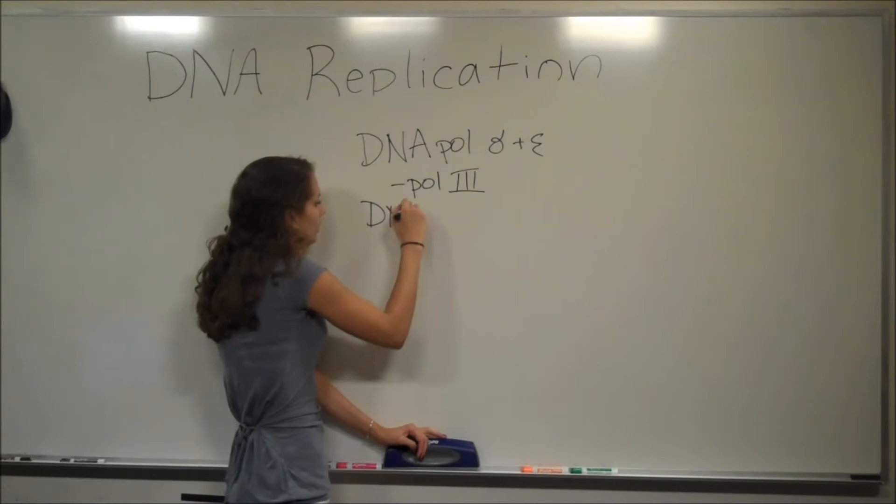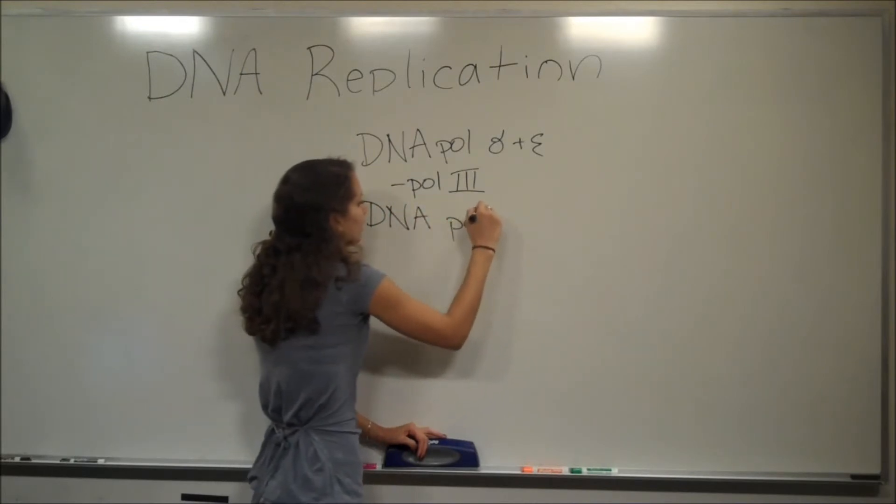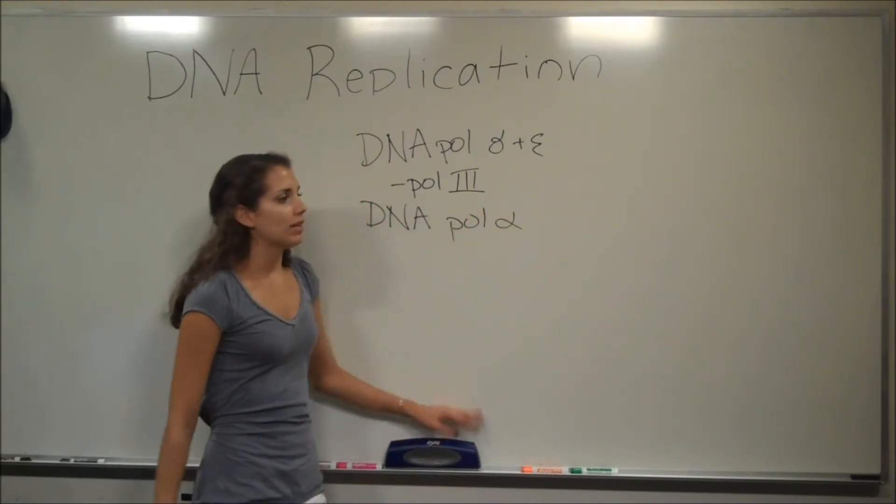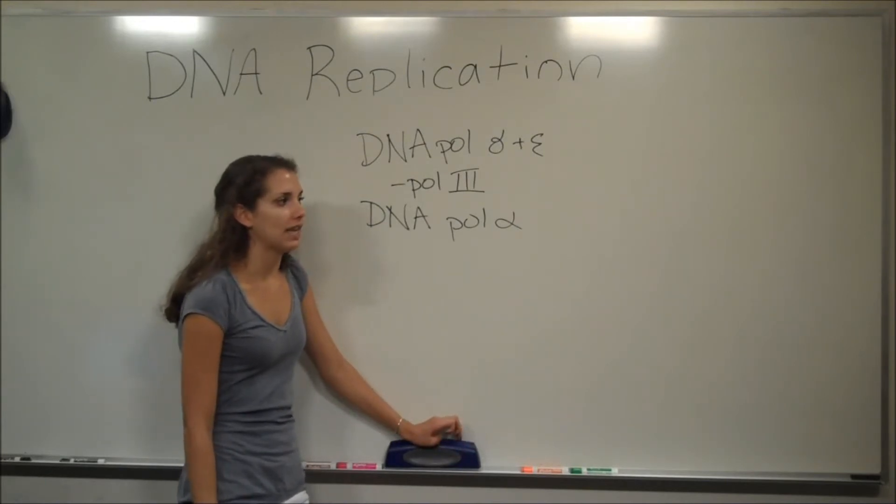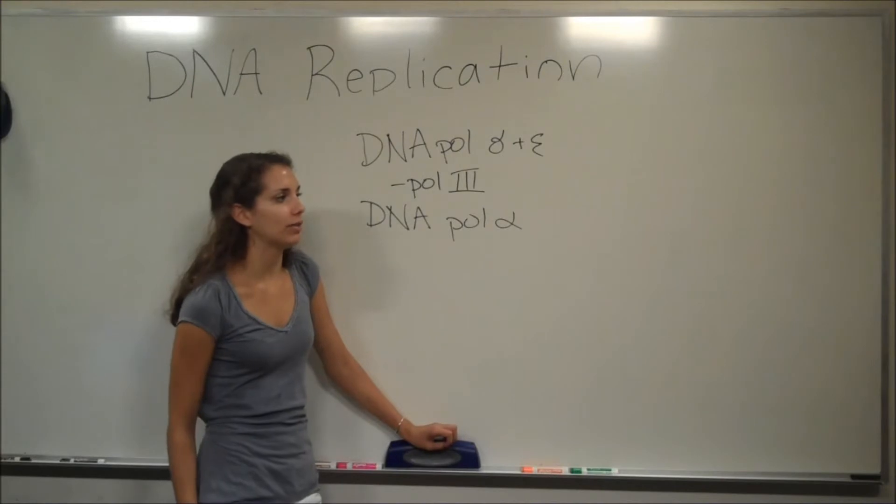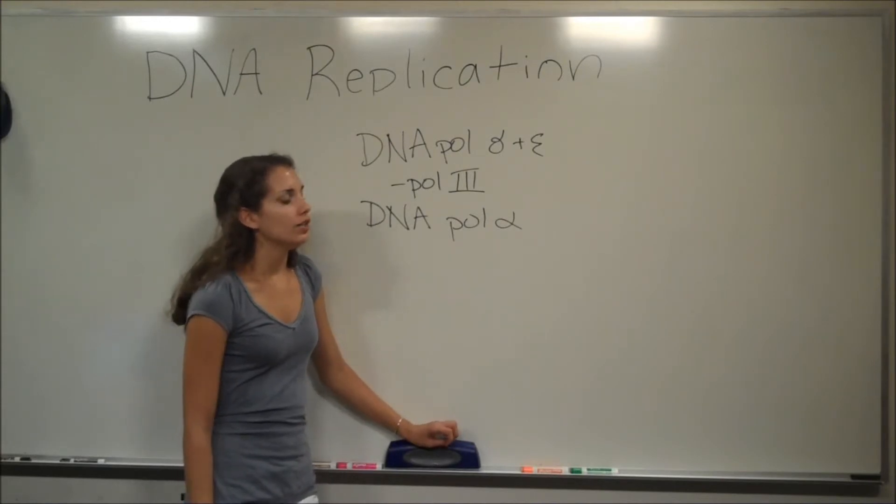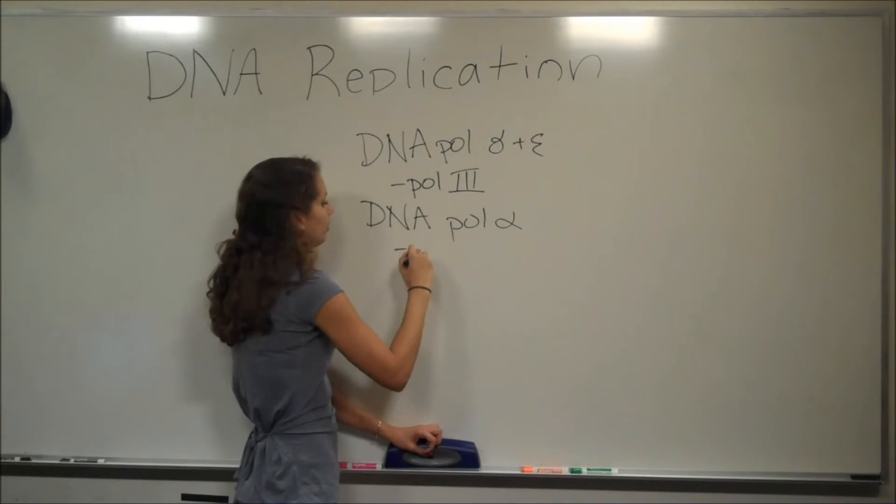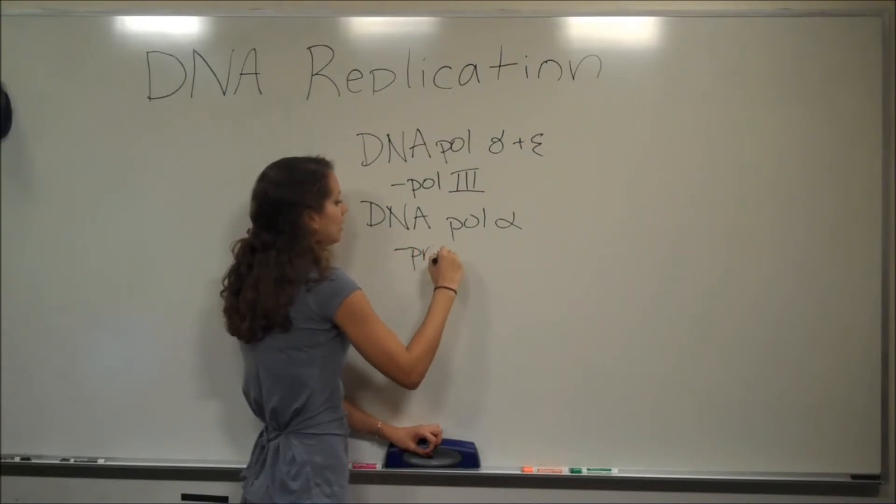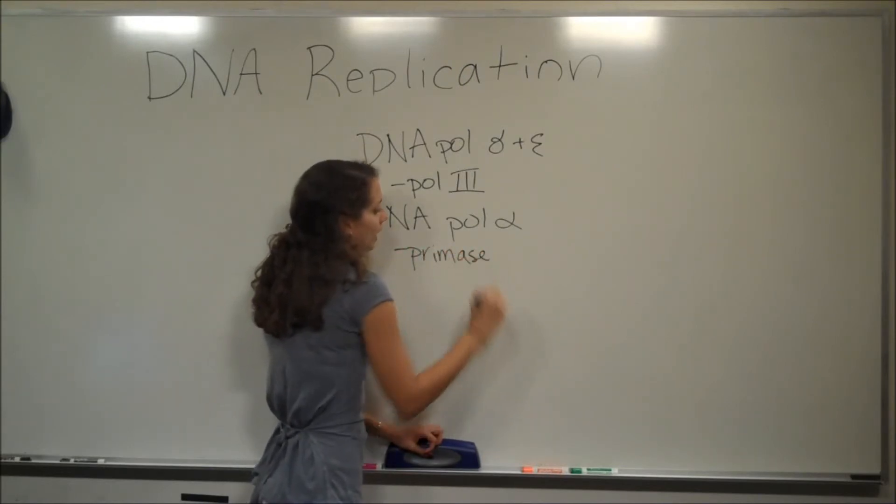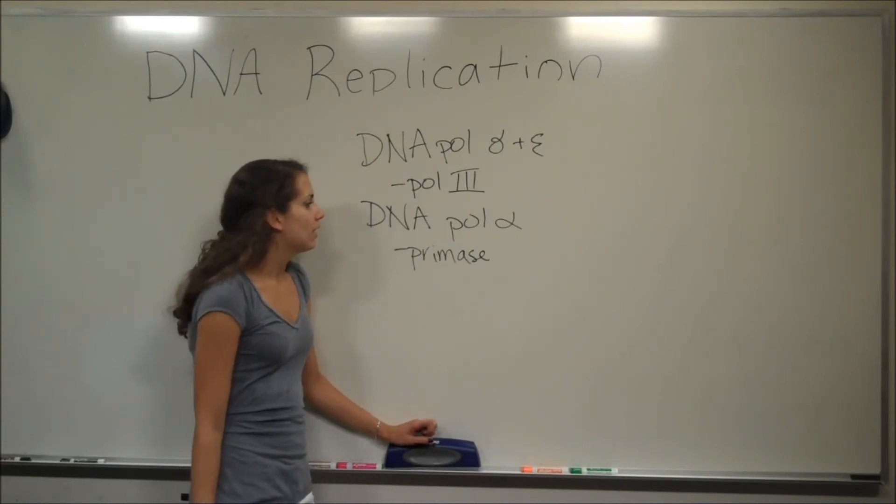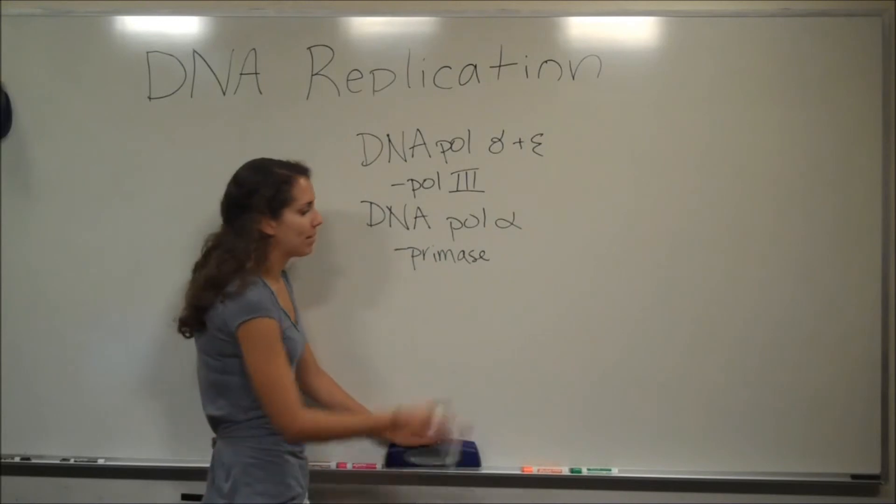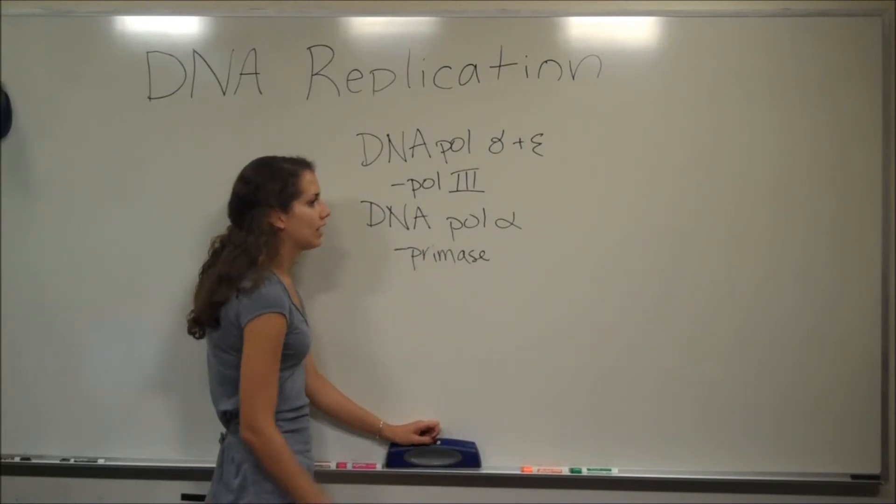Also in eukaryotes is DNA polymerase alpha. And DNA polymerase alpha synthesizes a short RNA primer followed by a longer stretch of DNA before polymerase delta or polymerase epsilon take over. So this has another counterpart in prokaryotes called primase. I didn't really go over it, but I kind of briefly talked about how the polymerase 3 requires an RNA primer. So primase does this for polymerase 3, and DNA polymerase alpha does it in eukaryotes.